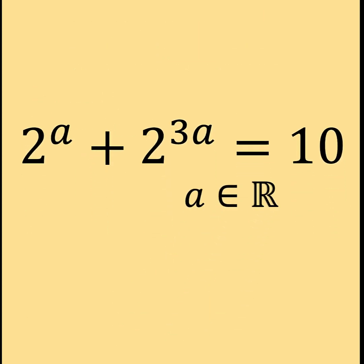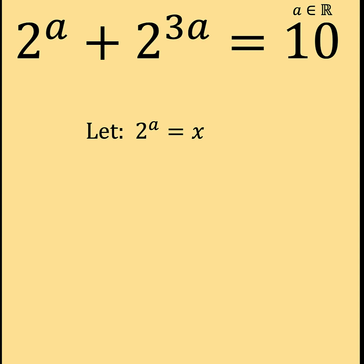Now let's solve this problem together. The first thing we are going to do is rewrite our given equation to make it look more simple. We can accomplish that by doing substitution. So we let the value of the expression 2 raised to A be equal to variable X. Then based on this substitution, we can now express the second term 2 raised to 3A as the quantity 2 raised to A all raised to 3 using the inverse of the power of power law of exponent.